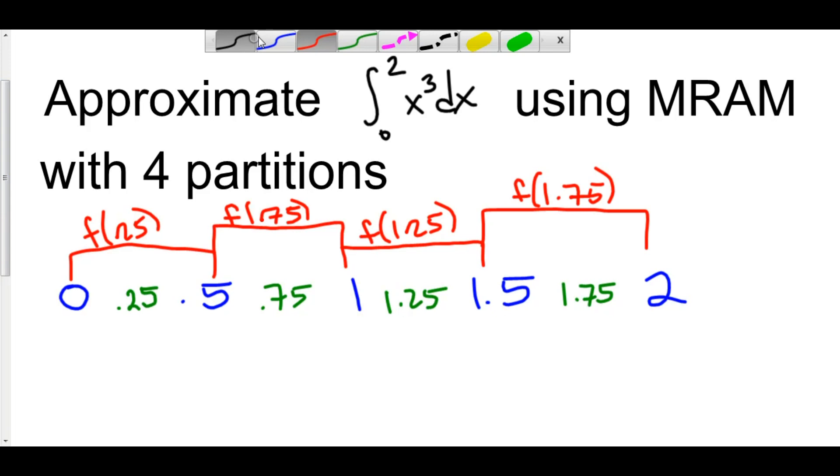The height, or the width between these two rectangles, our h, is still going to be 0.5, because we're going from 0.25 to 0.75. It's still 0.5.